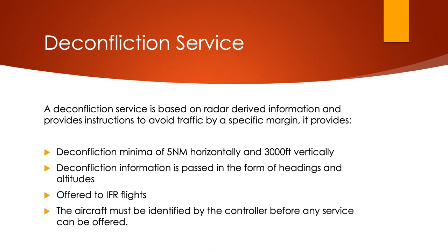The deconfliction service also requires radar, as it is radar-derived information. The controller will provide instructions to avoid traffic by a specific margin — five nautical miles horizontally and three thousand feet vertically — passed in the form of a heading and altitude that we must fly. It is only offered to IFR traffic, so as PPL students it won't apply much. The aircraft must be identified by the controller before any service can be offered, using a squawk code and an ident so the controller can positively identify the aircraft on their radar screen.